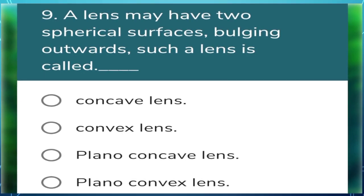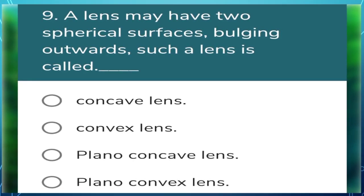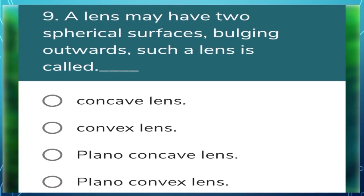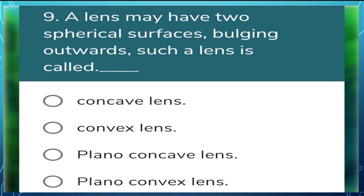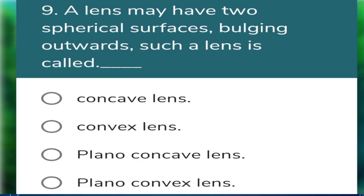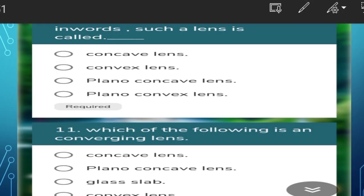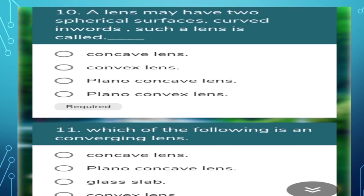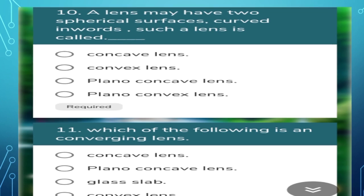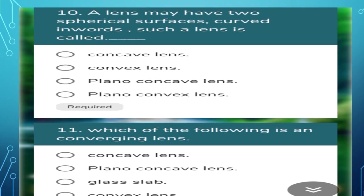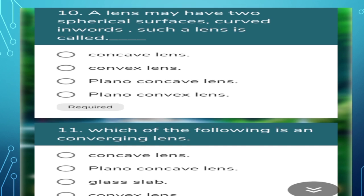Next question: a lens with two spherical surfaces bulging outwards is called? Bulging outwards means it is a convex lens — the second option is correct. The following question: a lens with two spherical surfaces curved inwards is called? Curved inwards means it is a concave lens — the first option is correct.